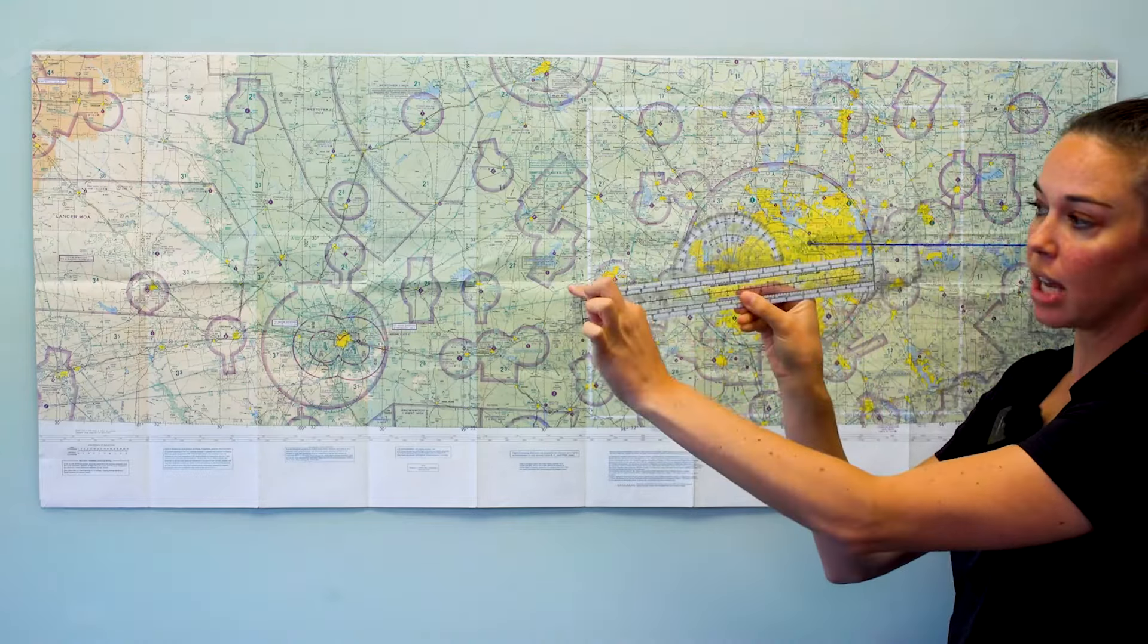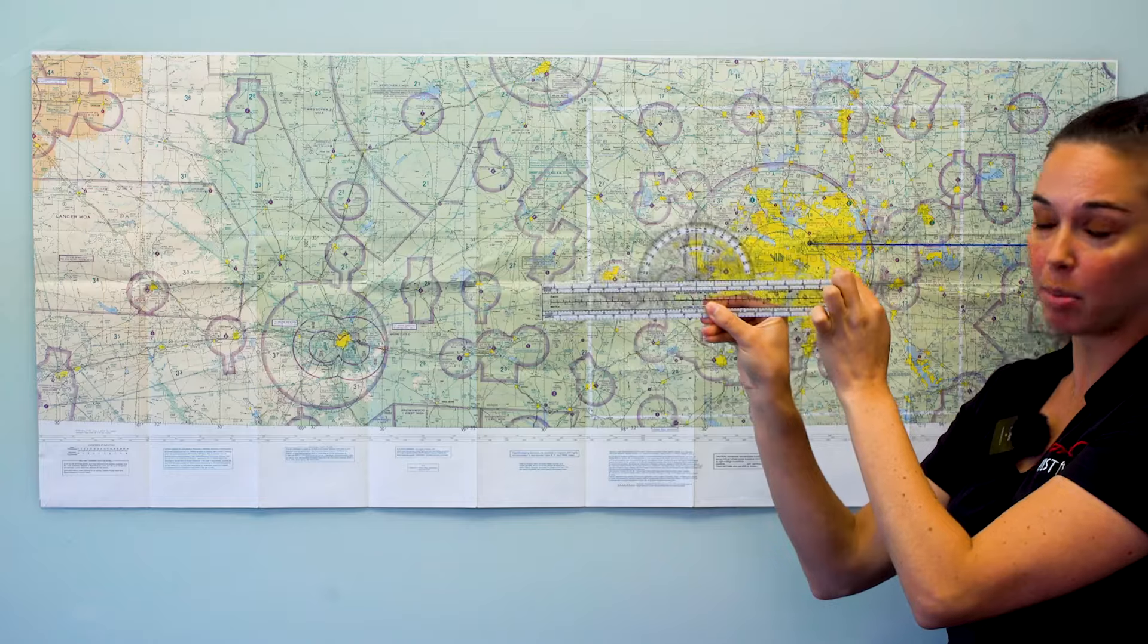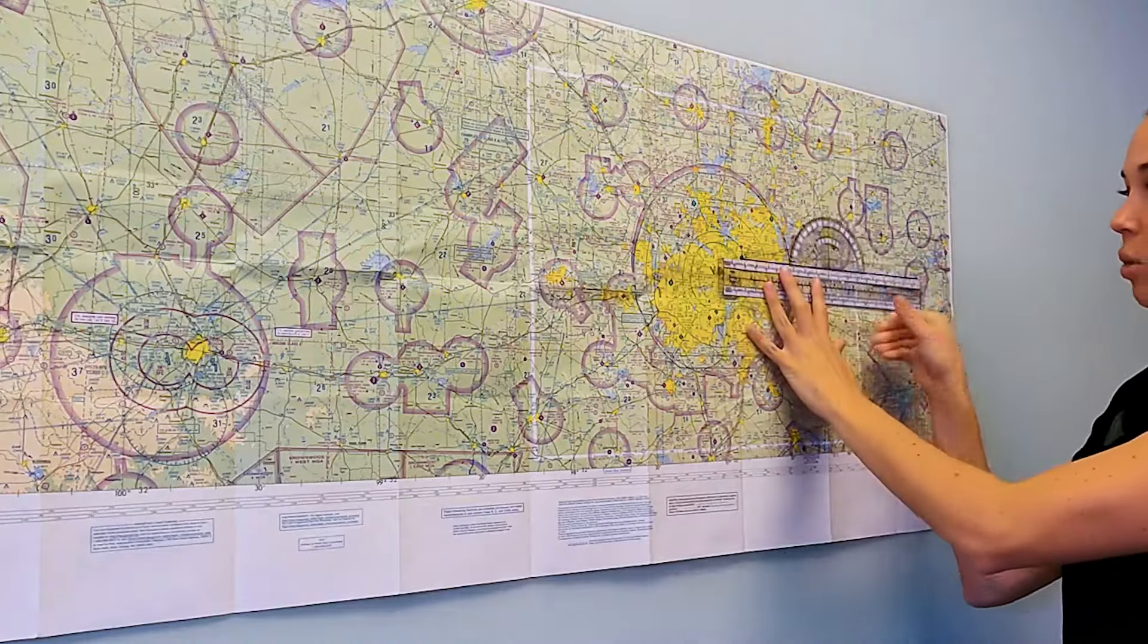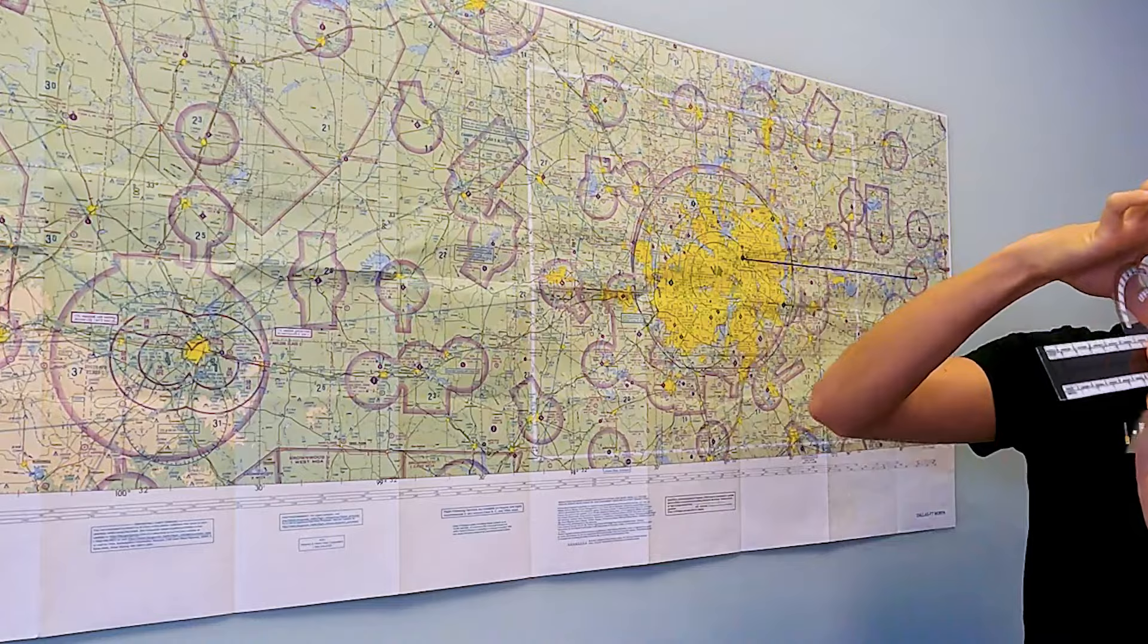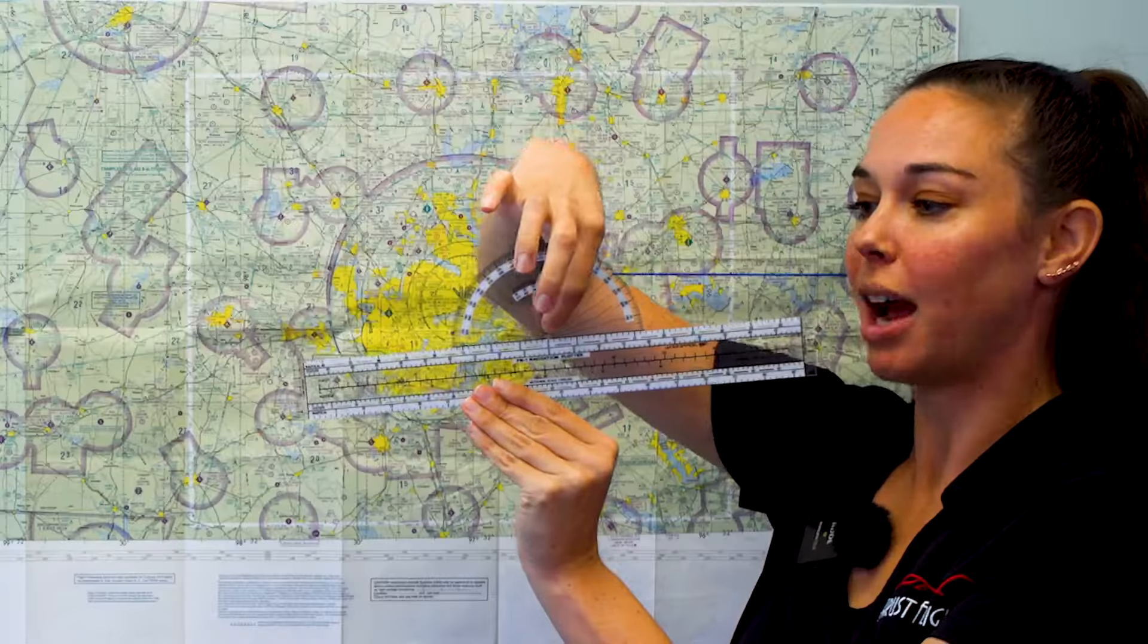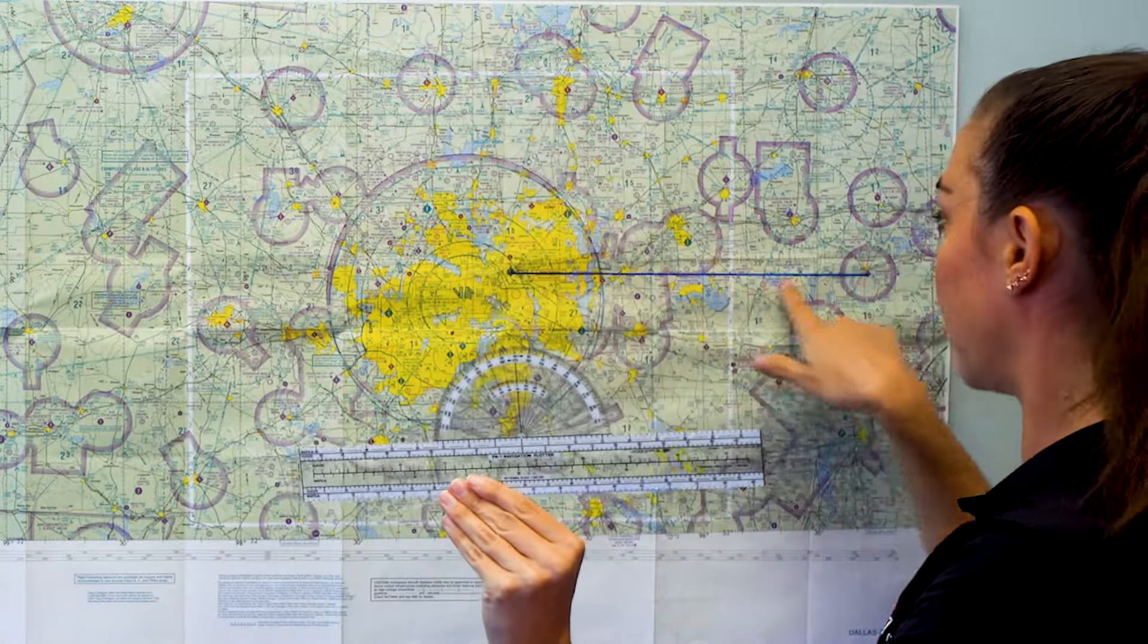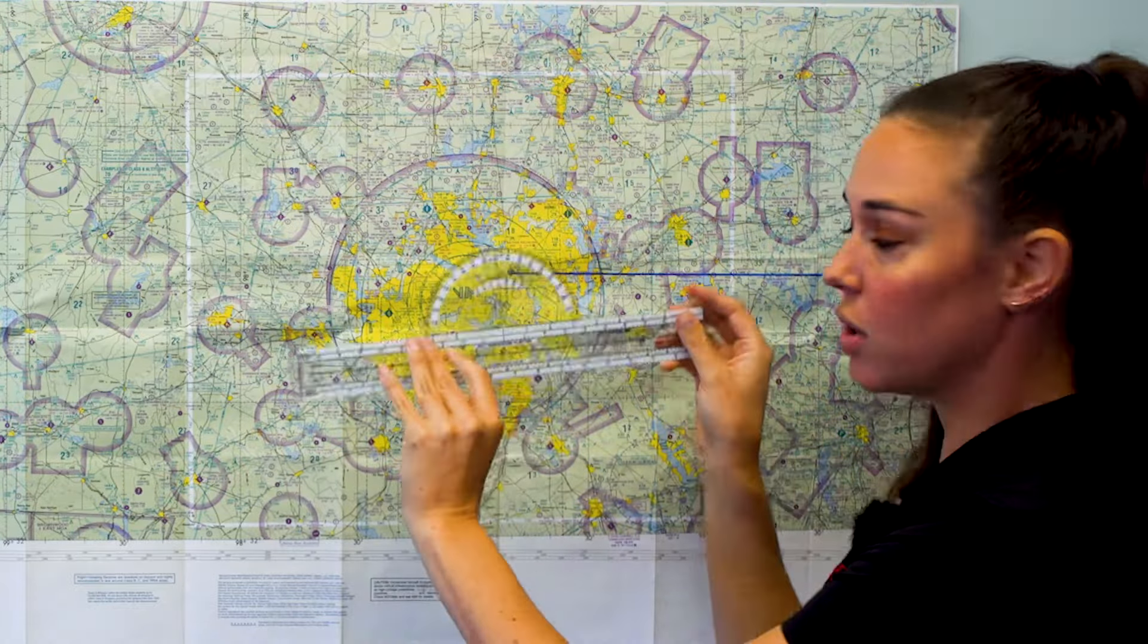So what we're supposed to do is now take the top edge of my plotter and place that on my course line. There's a small hole, if you can see it, they call it a grommet, that I'm supposed to place right on that course line and also where a line of longitude intersects it. So let me show you how to do that.